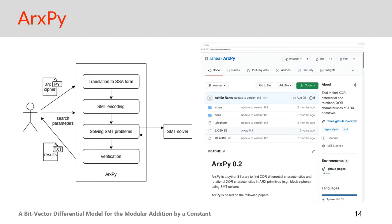First, arxpy translates the Python implementation of the cipher to single static assignment form, which is easier to manipulate. It encodes and creates the SMT problems, communicates with the SMT solver to find satisfiable problems, and verifies the characteristics obtained by sampling many plaintexts and many keys, providing the results to the user. The tool arxpy is fully open source — you can find it on GitHub — and we also provide complete documentation so it can be useful to the community.